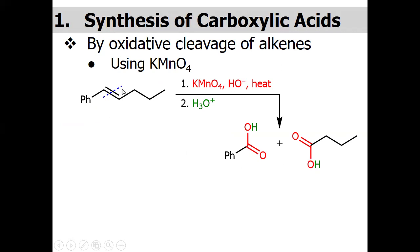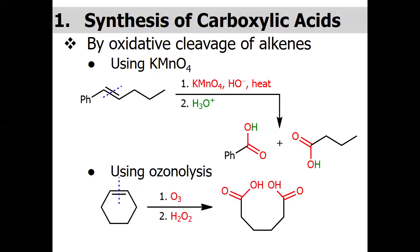This molecule is an asymmetrical molecule, that is why we are having two different types of carboxylic acid. The detailed mechanism of this reaction has already been explained in one of my lectures based on reactions of alkenes. Similarly, ozonolysis can also give carboxylic acid. In this case we use ozone, and in the second step oxidation occurs using hydrogen peroxide to give the carboxylic acid.